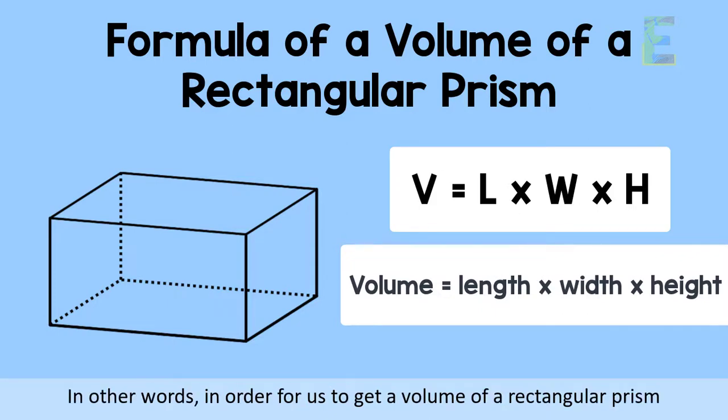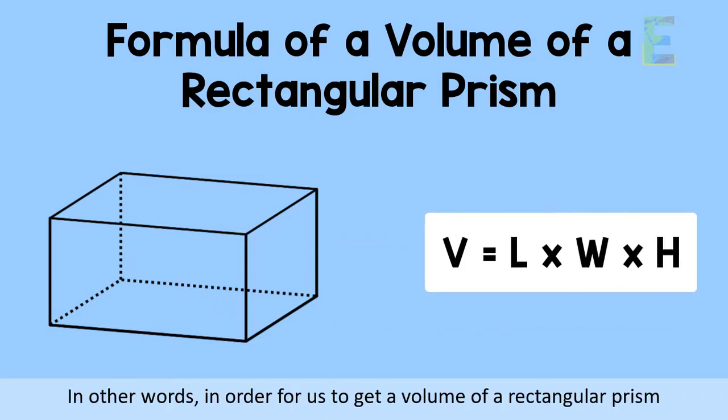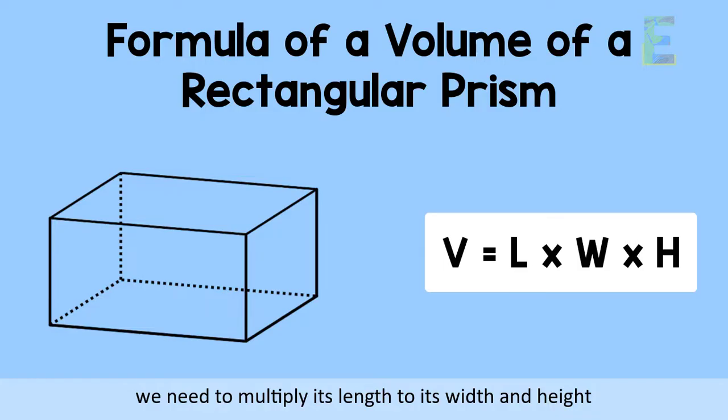In other words, in order for us to get a volume of a rectangular prism, we need to multiply its length to its width and height.